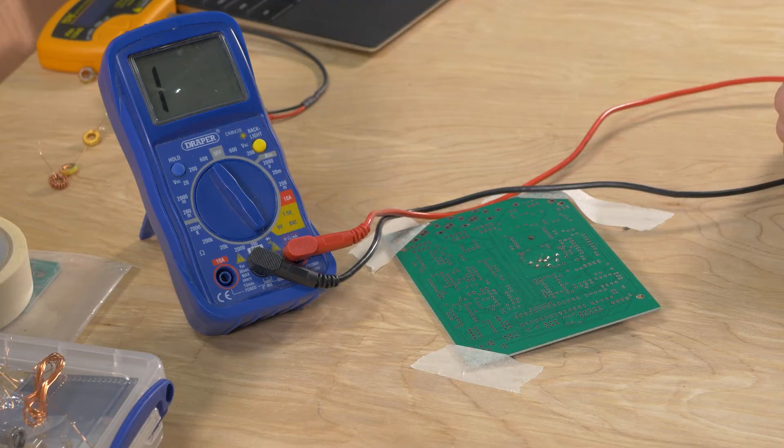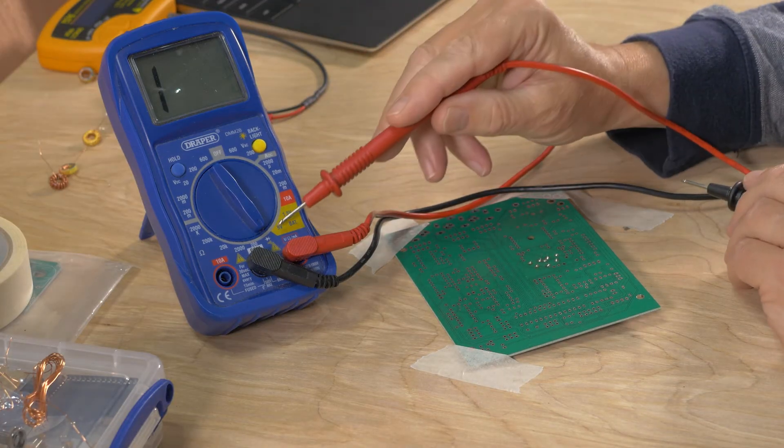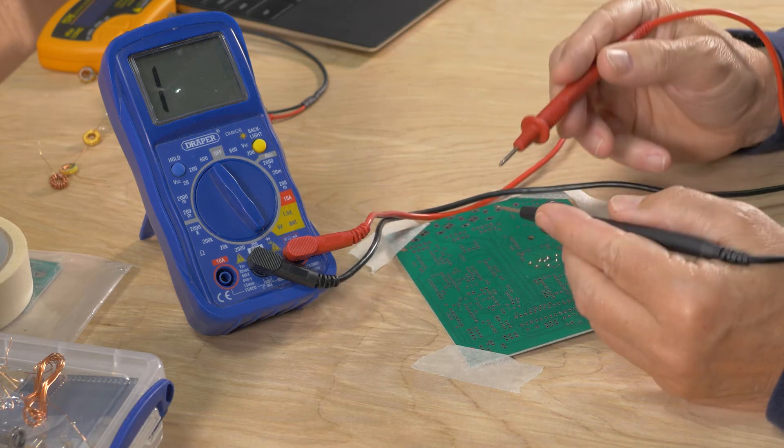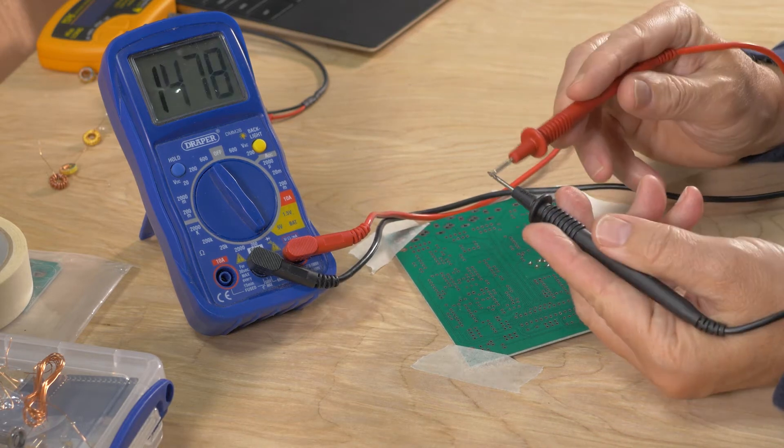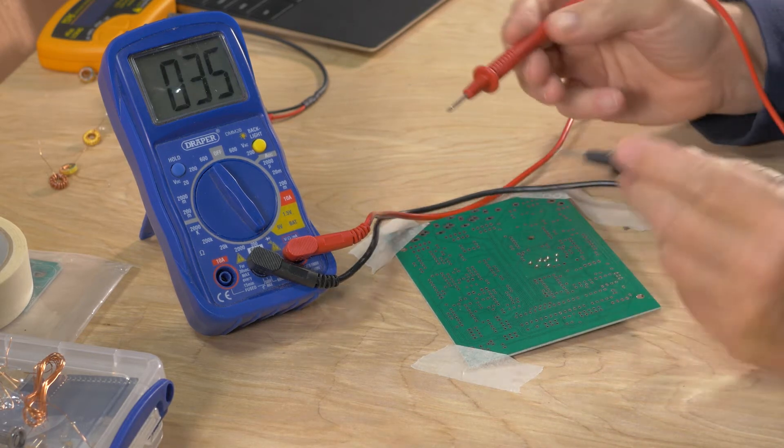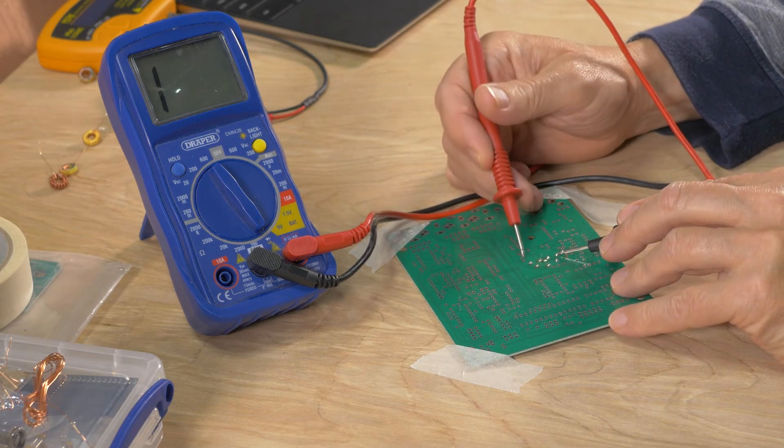To test it I'm using a multimeter set to diode mode, which just means that if the two probes are connected then the meter bleeps - one of the most useful bits of test equipment you can have.